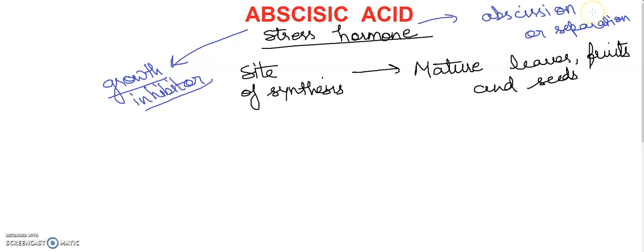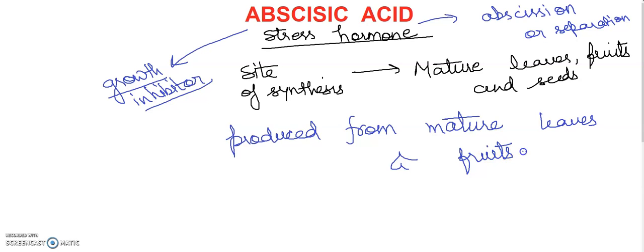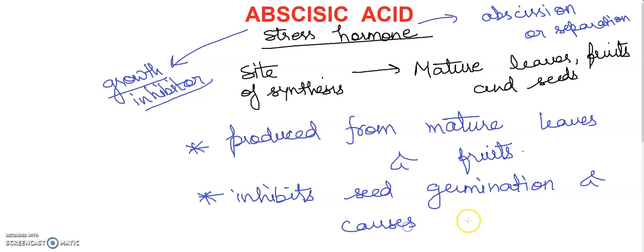It is a general inhibitor of growth and metabolism. Abscisic acid is produced by mature leaves and fruits. Produced from mature leaves and fruits. Abscission of leaves and fruits. Seed germination, it inhibits seed germination and causes seed dormancy.